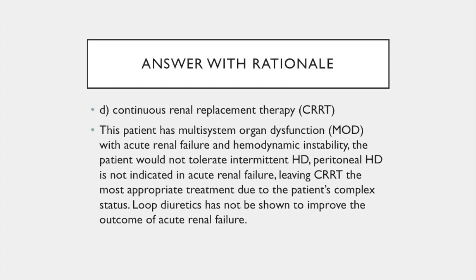This patient has multi-organ system dysfunction with acute renal failure and hemodynamic instability. The patient would not tolerate intermittent dialysis. Peritoneal dialysis is not indicated in acute renal failure. Thus, CRRT is the most appropriate treatment due to the patient's complex status. Loop diuretics have not been shown to improve the outcome of acute renal failure.